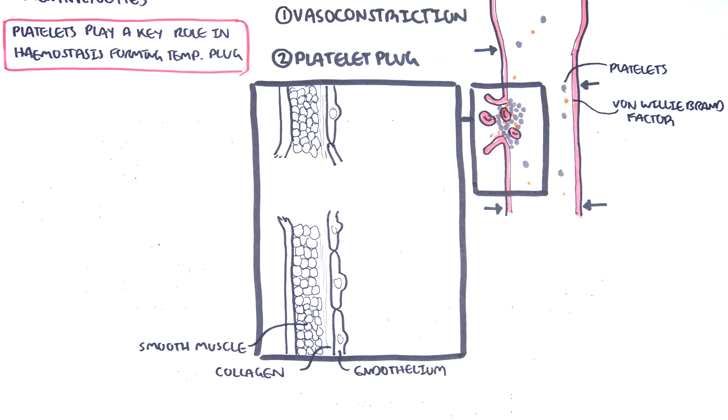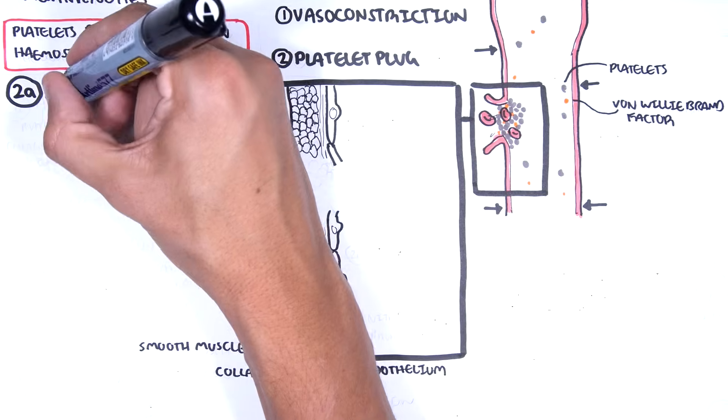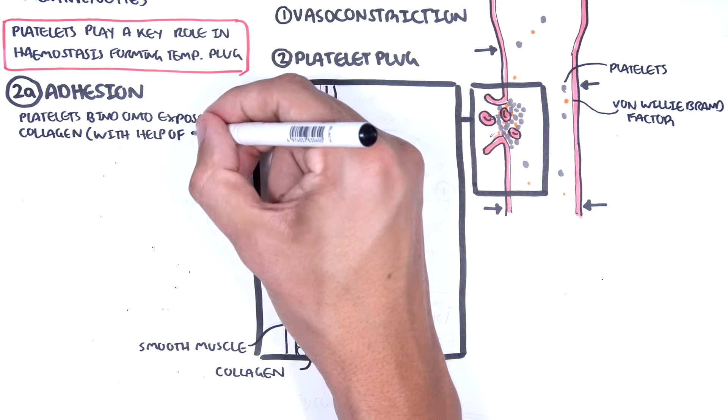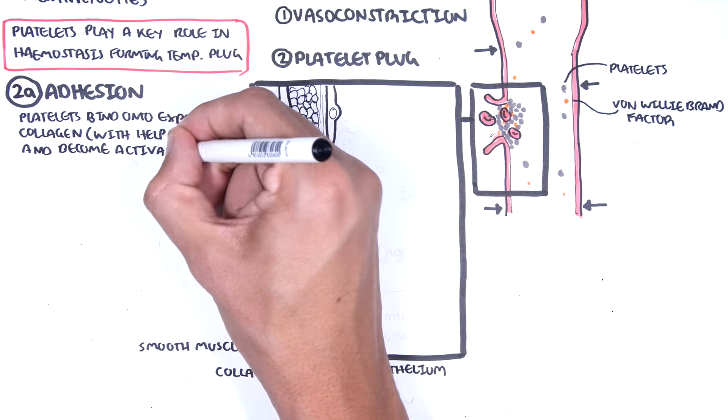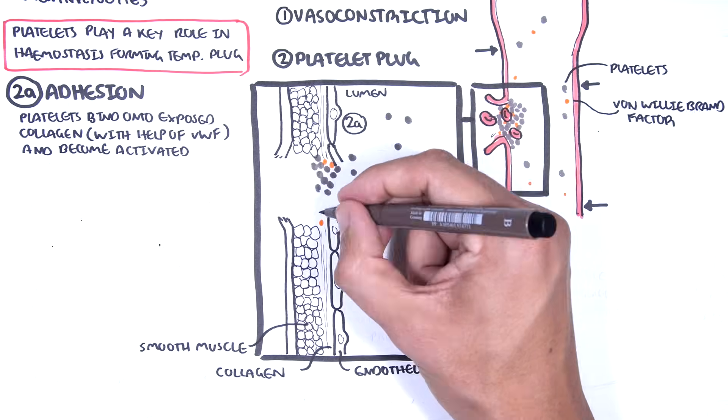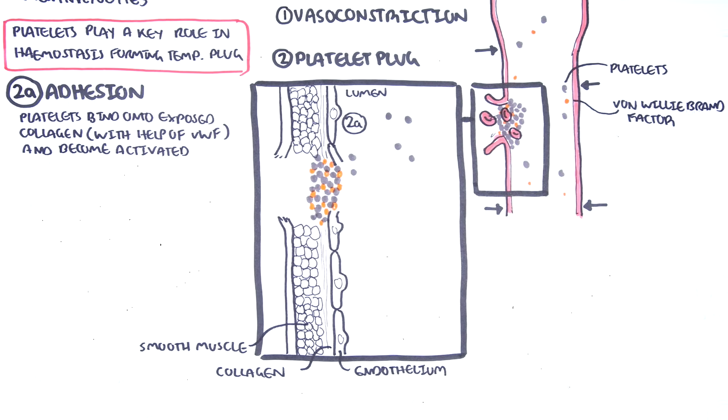There are three main steps in the formation of the temporary platelet plug. Adhesion: this is where platelets bind onto exposed collagen with the help of von Willebrand factor and then become activated. Here you can see platelet and von Willebrand factor binding onto the exposed collagen.